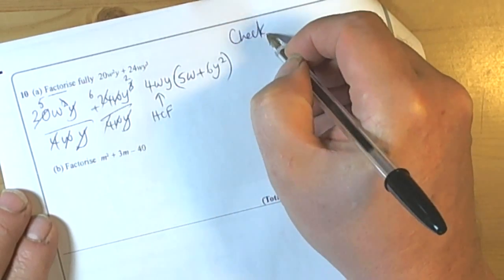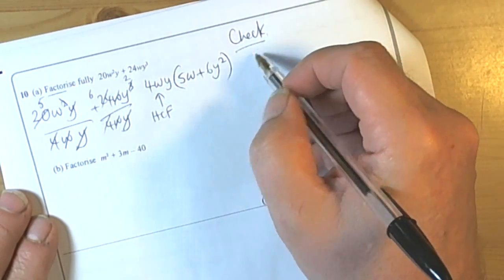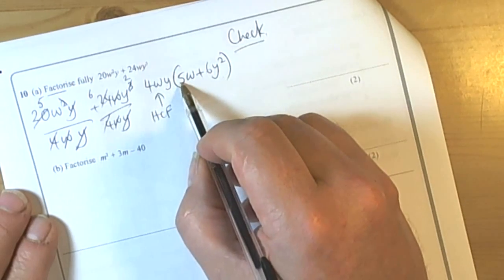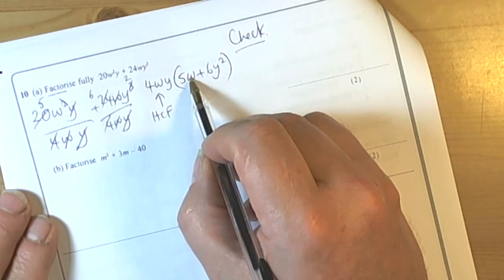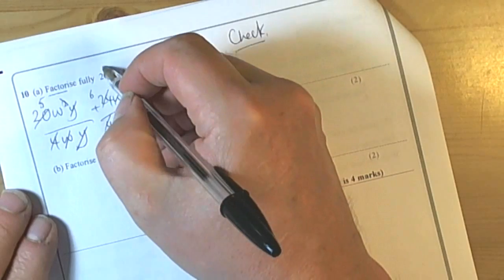Always check, so we should check by multiplying out. So we've got 4 times 5 is 20, W times W is W squared, and we've got a Y involved, so that bit checks.